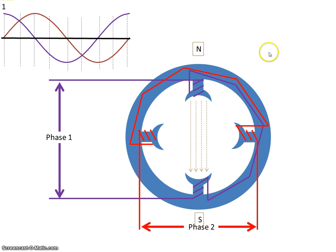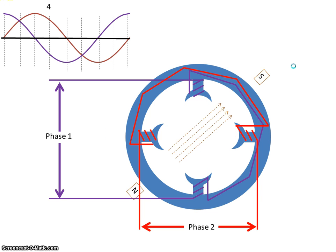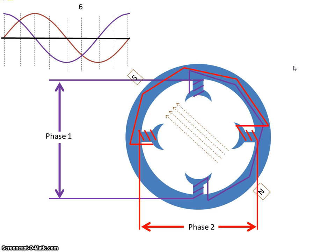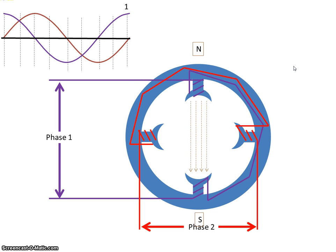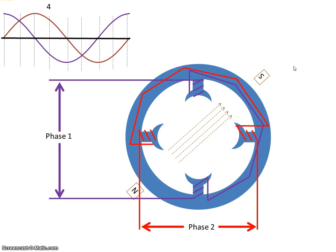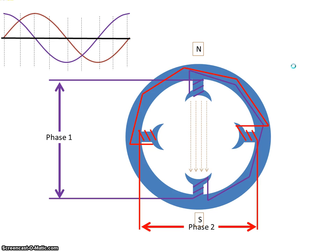So if we look at how this north pole has moved: position one is there, position two there, position three, four, five, six, seven, eight, and back to one. So we can see it's rotating around the stator. And that's how you generate a rotating magnetic field.